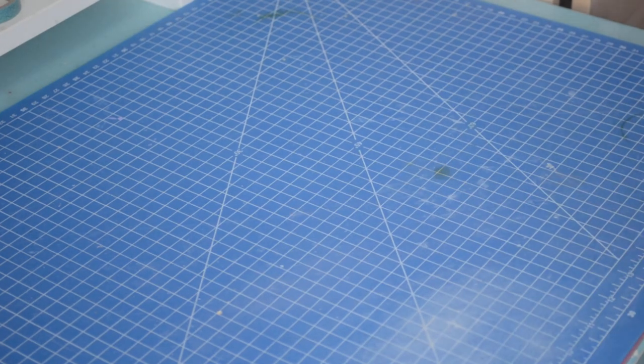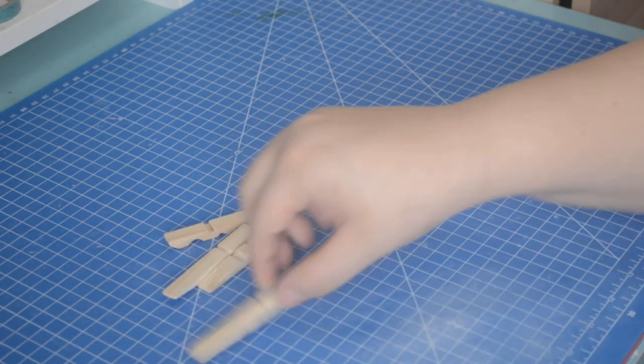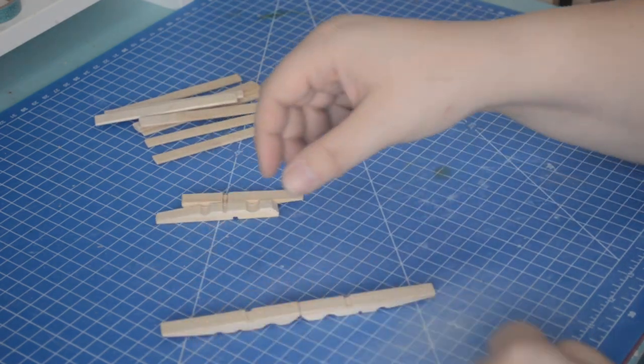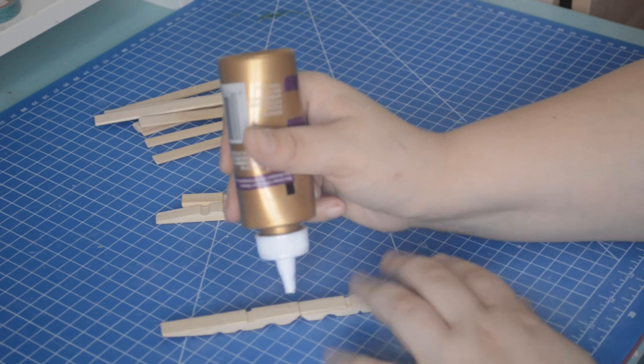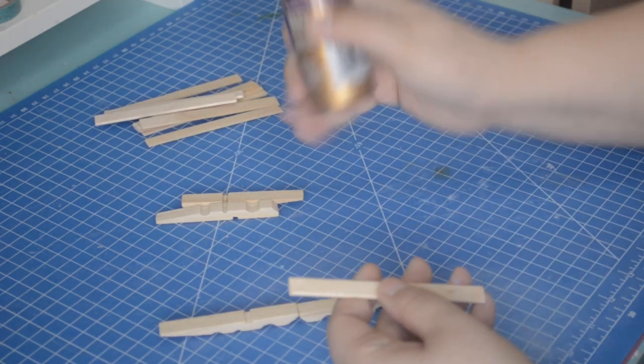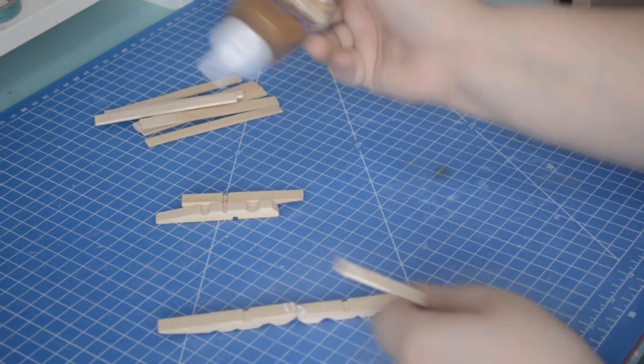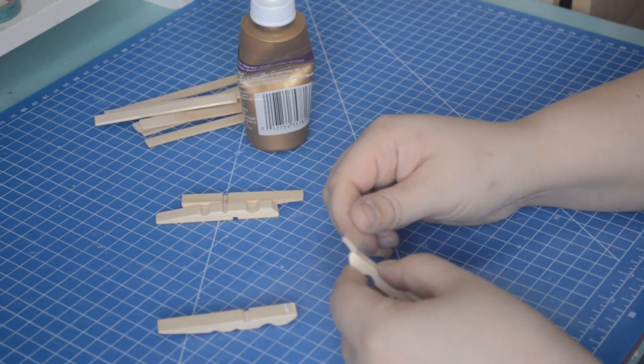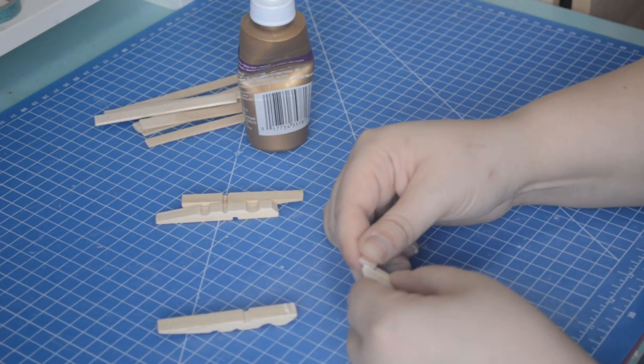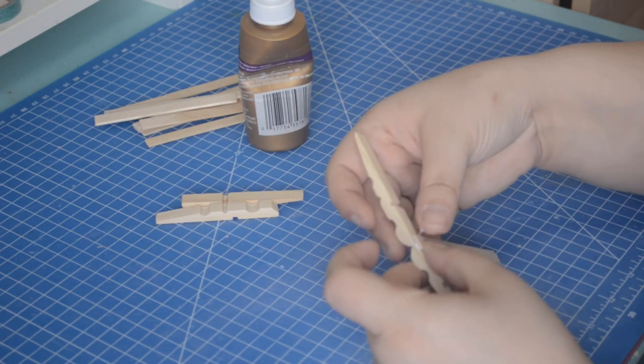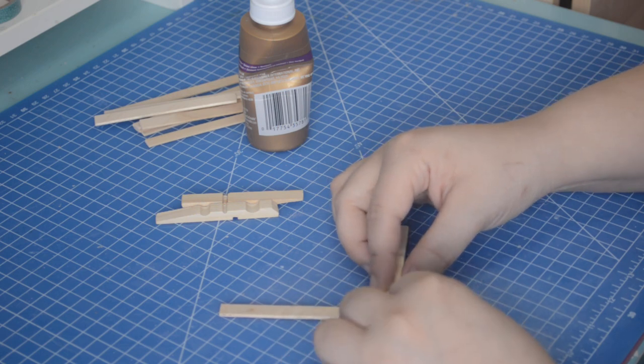Now it's time to assemble the bed frame. I admittedly struggled a little with this part because I wanted the glue to dry way faster than it actually did. I prefer using tacky glue because it has a stronger hold over hot glue, but I need to work on my patience, so I just put it aside and don't touch it.